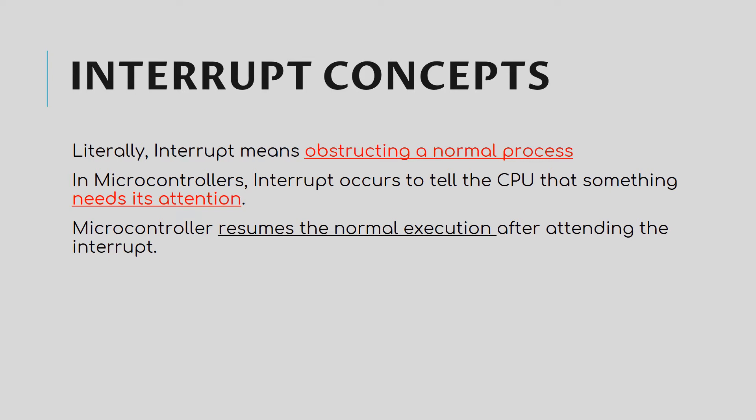So what is an interrupt? Literally, interrupt means obstructing a normal process. In case of microcontrollers, an interrupt occurs to tell the processor that something needs its attention. The microcontroller then pauses the normal execution and goes to the interrupt service routine where some instructions are written.